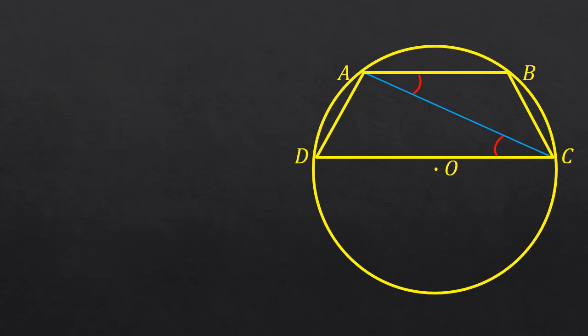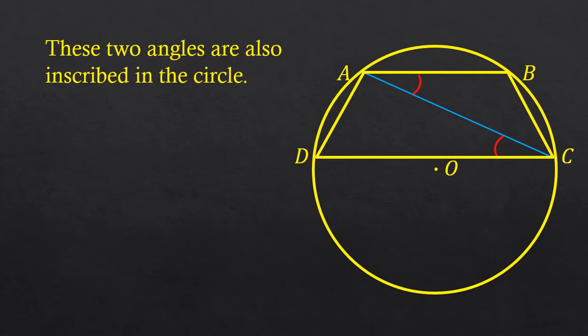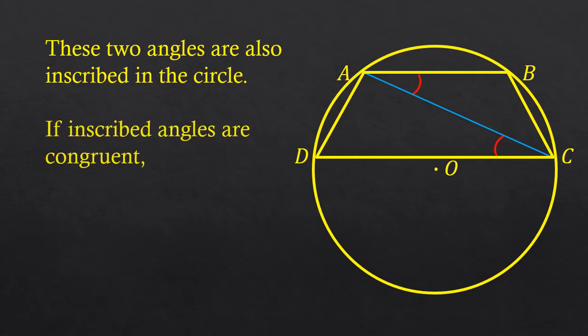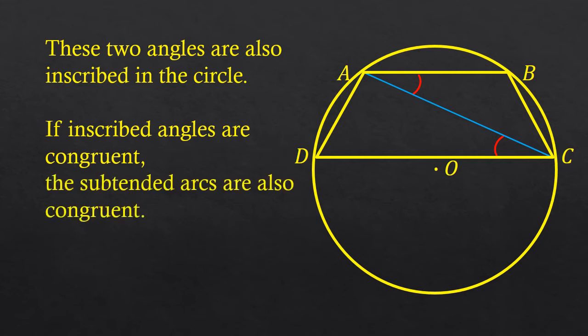Now, the other thing about this picture is that the two angles — angle ACD and angle CAB — are inscribed angles. That means their vertices are on the circle and they cut out a particular arc. One property of inscribed angles is that if they are congruent, then the arcs they subtend are also congruent. That is, arc AD is congruent to arc BC.